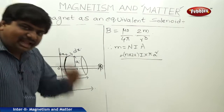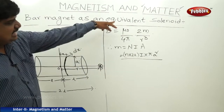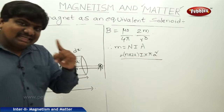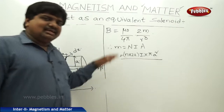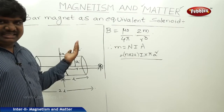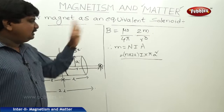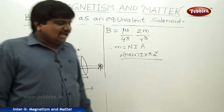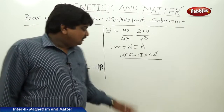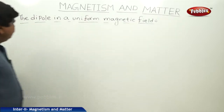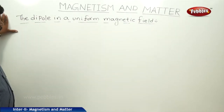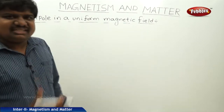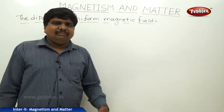So we got that a bar magnet is acting as a solenoid. The expression of the magnetic field due to a bar magnet is equal to the expression of the magnetic field due to a solenoid with respect to its single turn. So we can prove that a bar magnet is acting as an equivalent solenoid. Now we are discussing about the dipole in a uniform magnetic field. A magnet itself is a dipole — the best example of a magnetic dipole is a bar magnet.